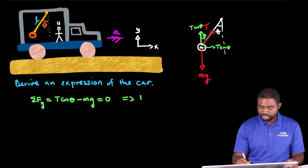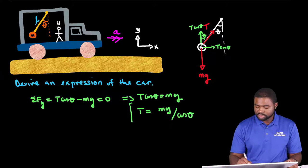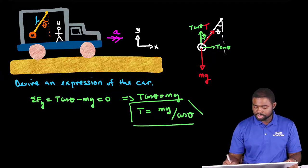And this means that T cosine theta is equal to mg. In other words, T is equal to mg divided by cosine theta. This is the value of the expression for T.